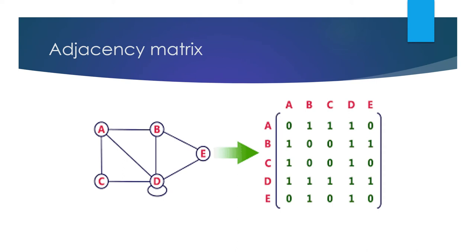For b to a, there is one edge, so it is taken as 1. For b to b and b to c, there are no edges, so it is taken as 0, 0. For b to d and b to e, there are edges, so it is taken as 1, 1.